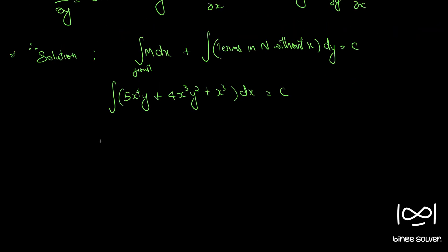So integrating this we get x raised to 5 by 5 becomes x raised to 5y plus 4y squared into x raised to 4 by 4. So that becomes x raised to 4y squared plus x raised to 4 by 4 equal to c.